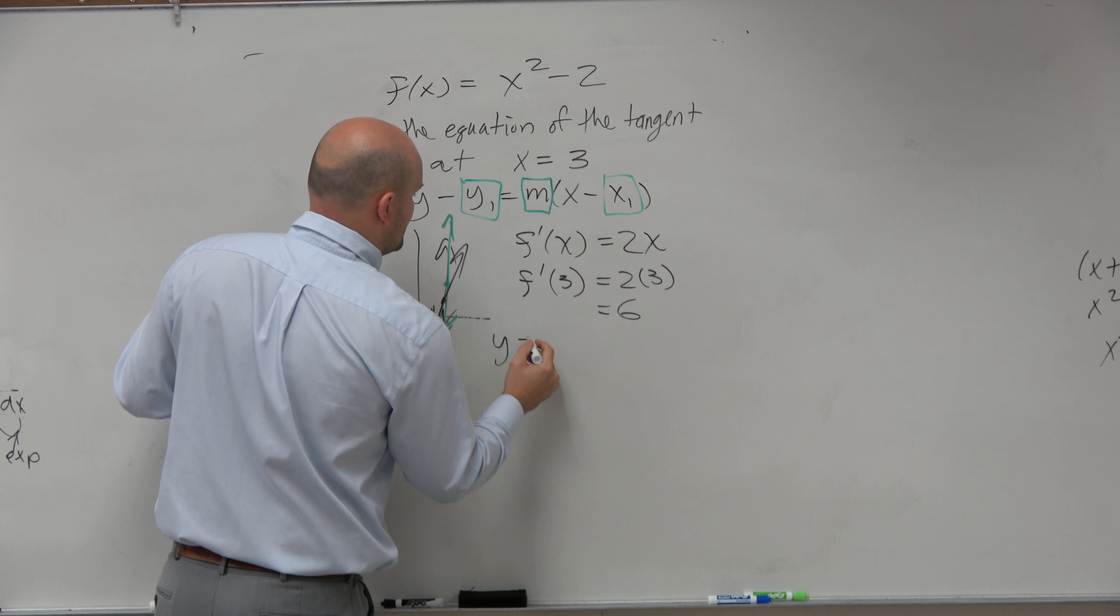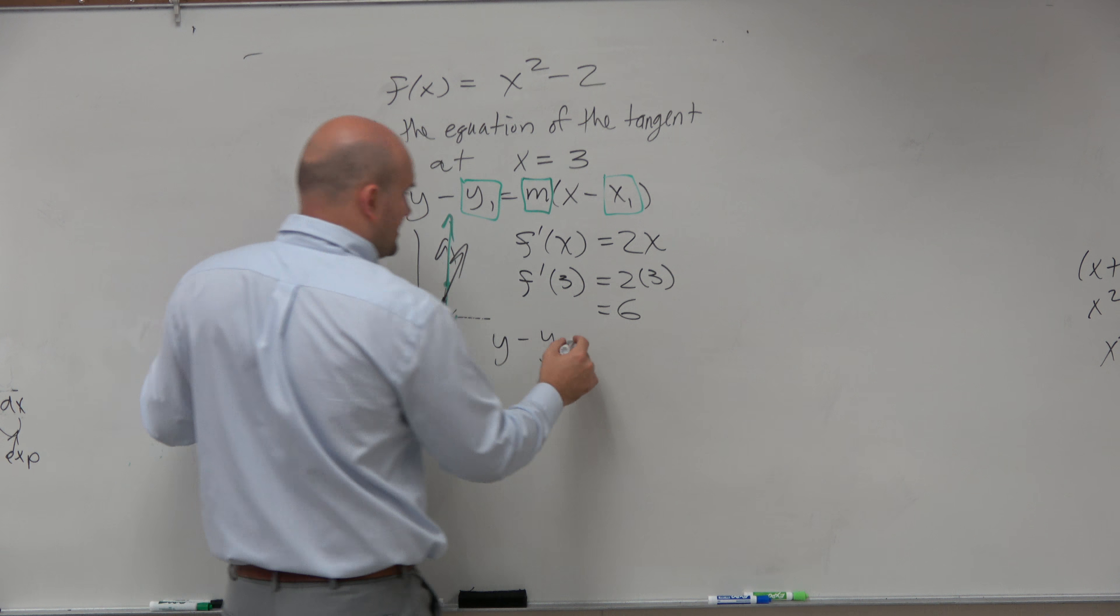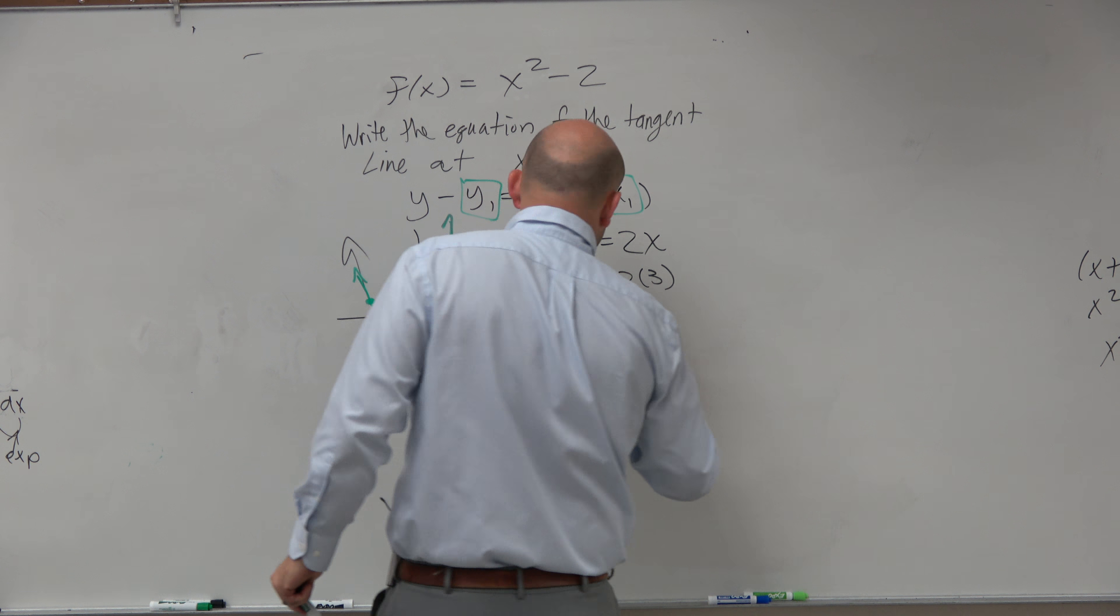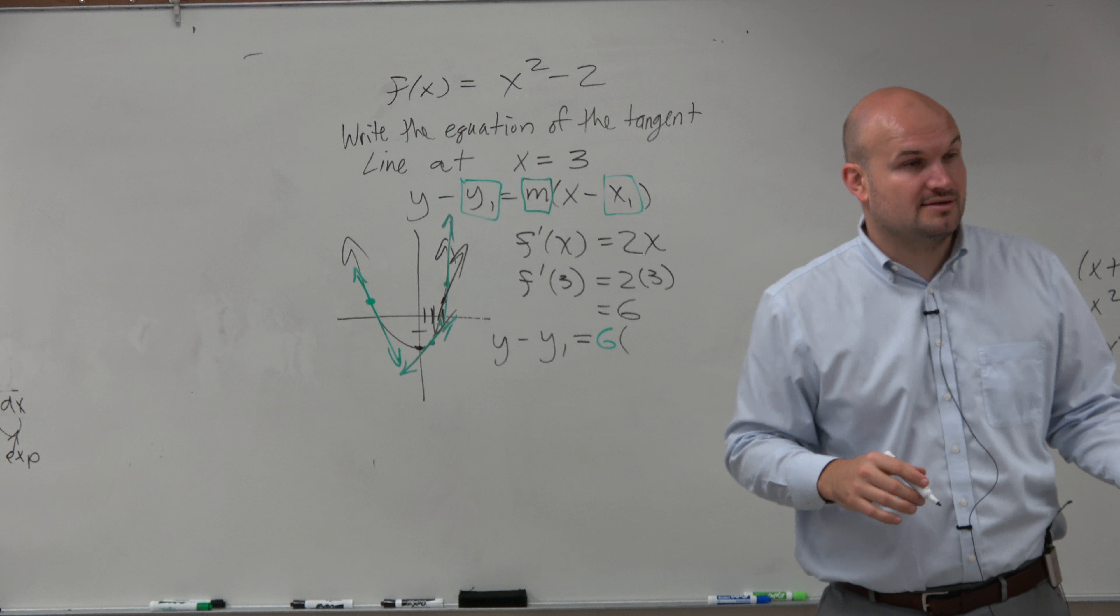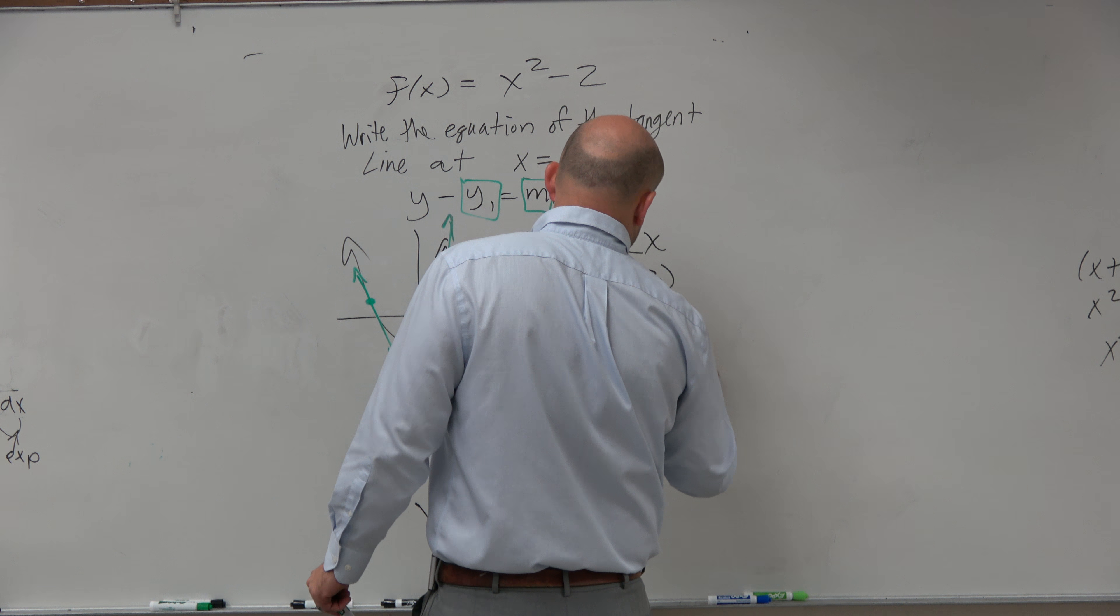So let's go down what we have. Do we have the y-value at x equals 3? Nope. Do we have the slope? Yep, that's 6. Do we have the x-coordinate that we're trying to write the equation at? It's in the problem, it's 3. So we have x minus 3.